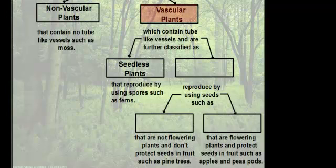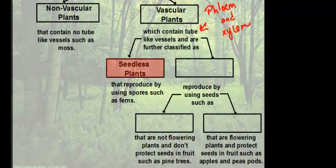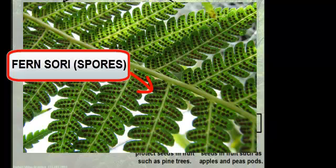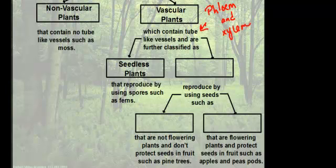Plants have evolved into vascular plants, which are the plants that do have these tube-like structures. Vascular plants can be broken down into two subgroups. We have plants called seedless plants, which reproduce by using reproductive structures called spores — ferns are one example, as they release spores into the air that fall into the ground and germinate into a new plant. The other group are seed plants, which produce seeds to make new organisms.